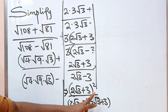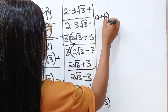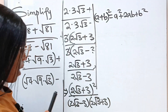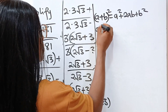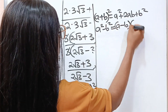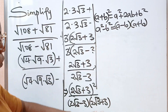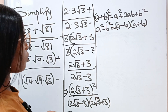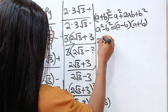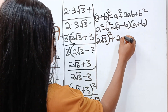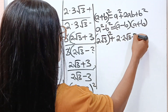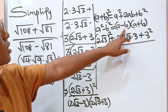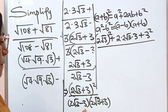Now look at what we have. We have A plus B squared for our numerator. Remember that A plus B squared equals A squared plus 2AB plus B squared. The denominator is a difference of two squares: A squared minus B squared equals A minus B multiplied by A plus B. Here, A is 2 root 3 and B is 3. So we express the numerator as 2 root 3 squared plus 2 times 2 root 3 times 3 plus 3 squared, divided by 2 root 3 squared minus 3 squared.